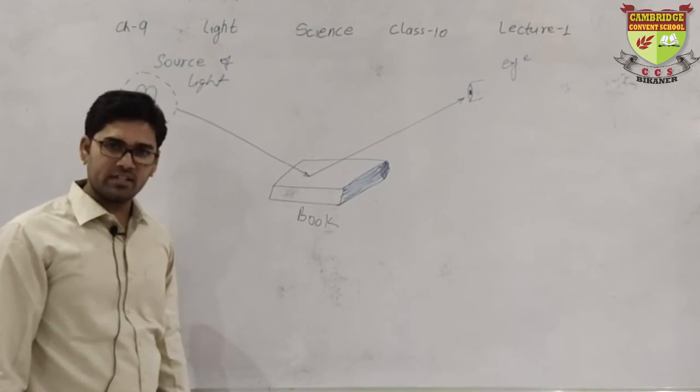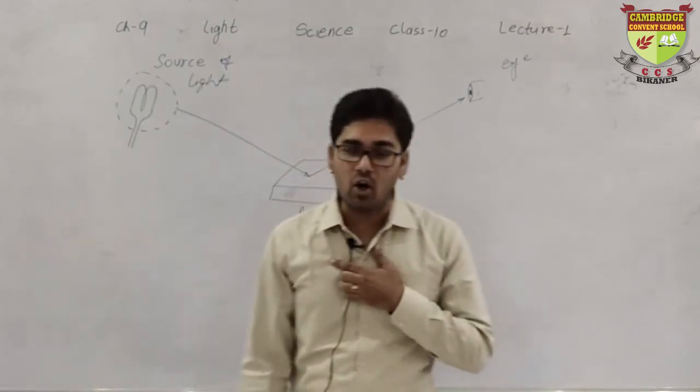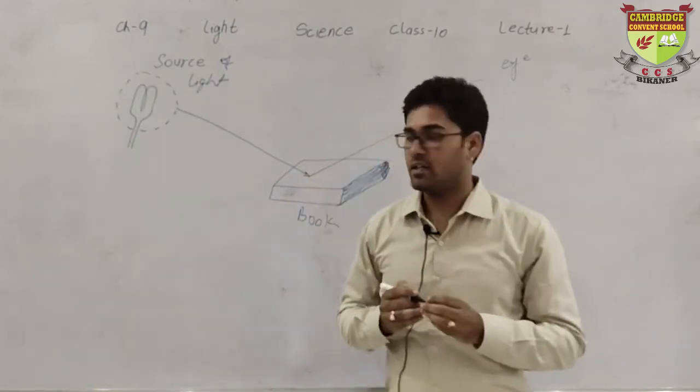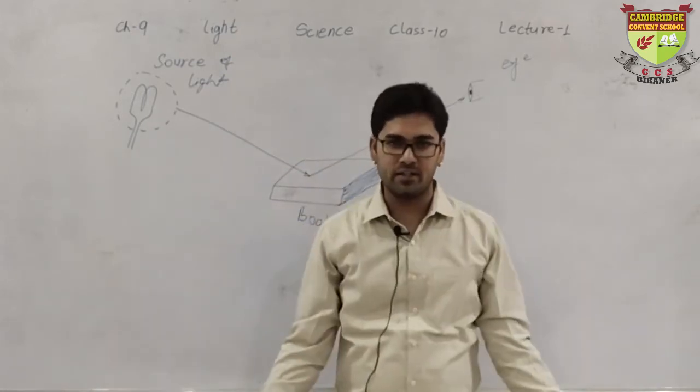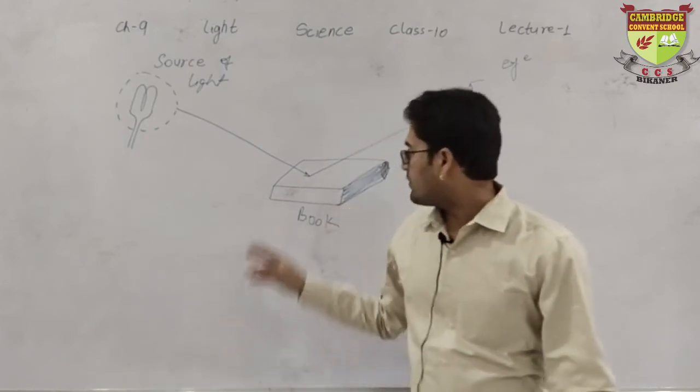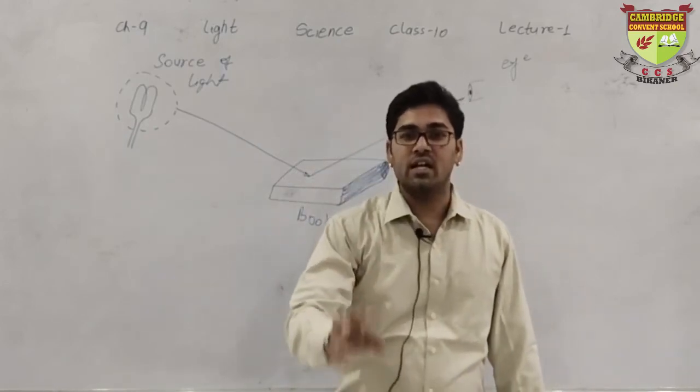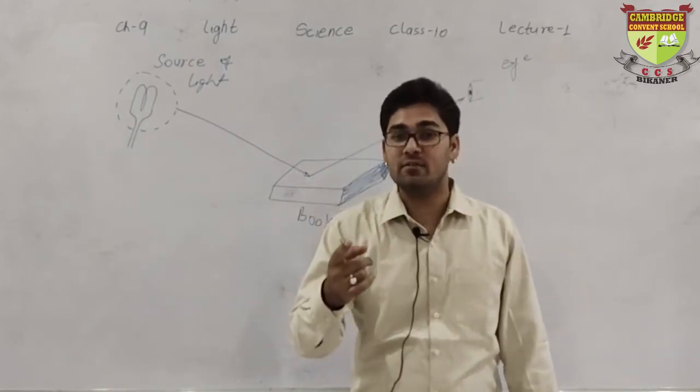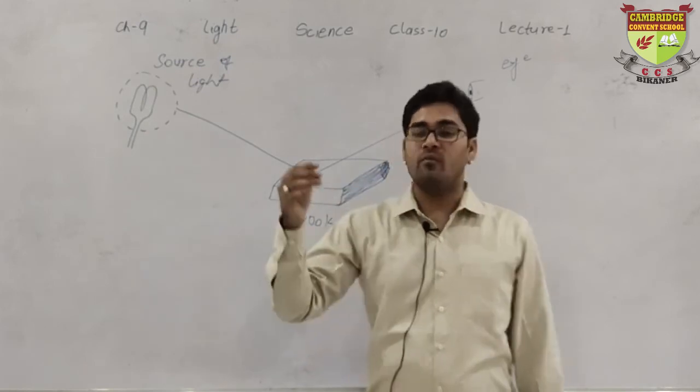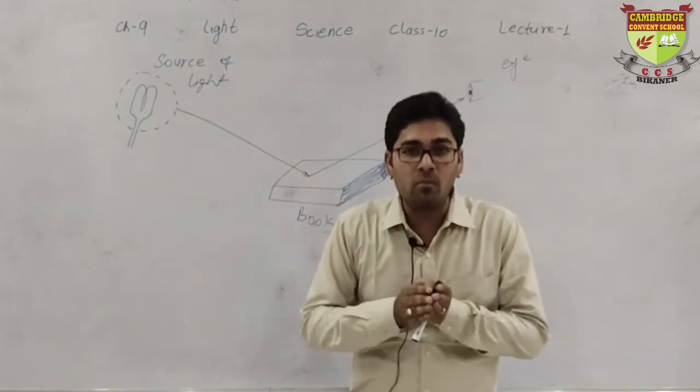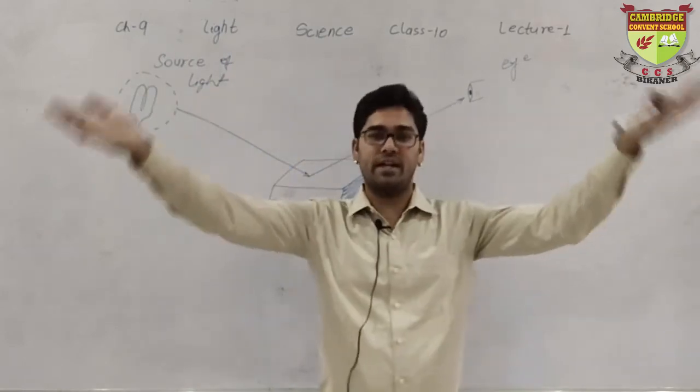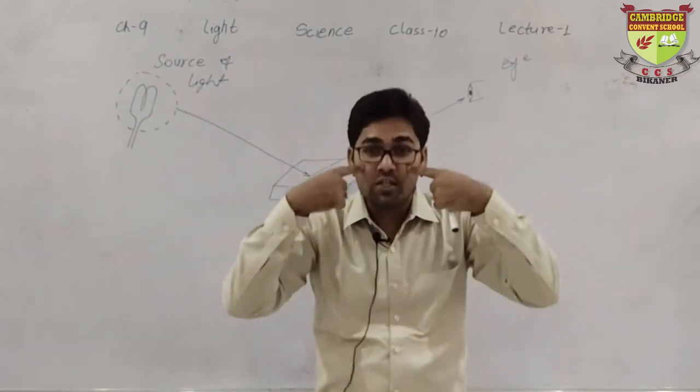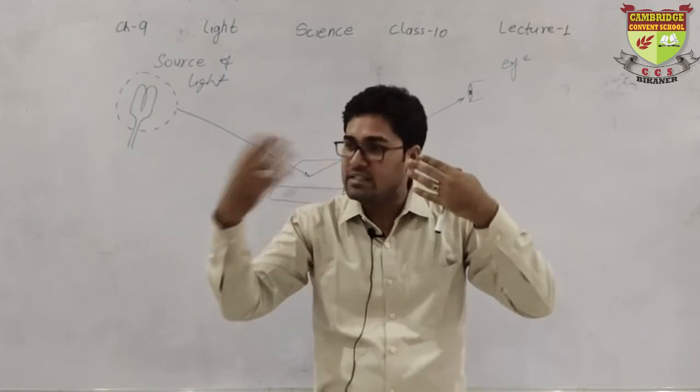And as it reaches to our eyes, we are able to see this object. Are you clear with this? So how can we see the objects? From any source of light, light reaches to all the objects around it. And from those objects, light reflects. What is reflection? I will explain you. When light bounces back from all those objects, and some of that bounced light, reflected light reaches to our eyes, we can see that object.